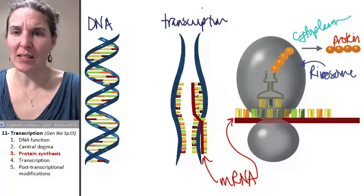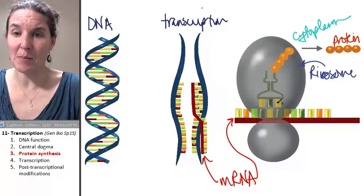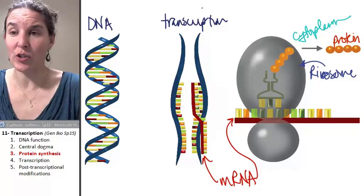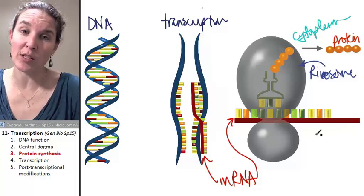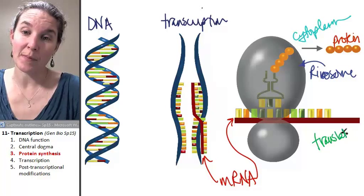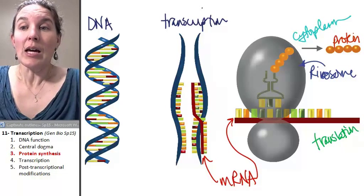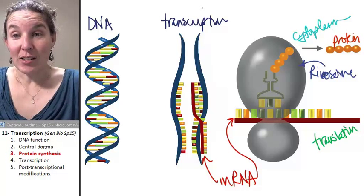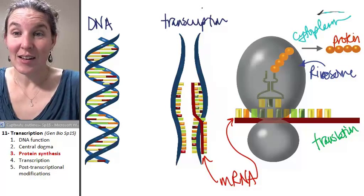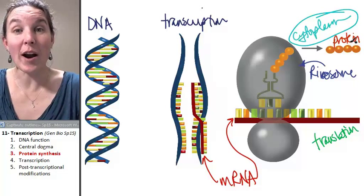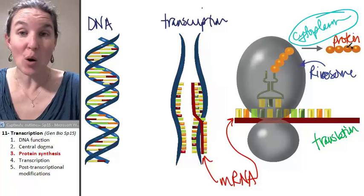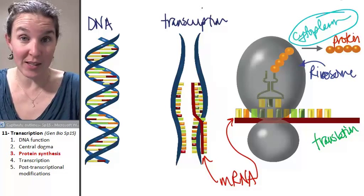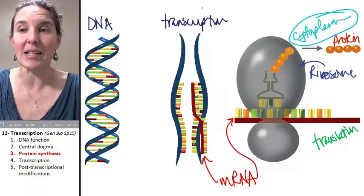This is the process: taking the messenger RNA and translating the information into the protein is the process of translation. Translation happens in the cytoplasm. Wherever you find a ribosome, translation can happen. Ribosomes live in the cytoplasm — they don't live in the nucleus.